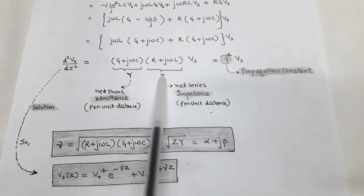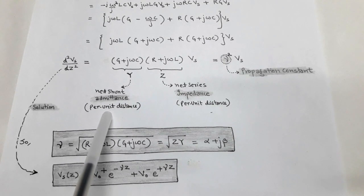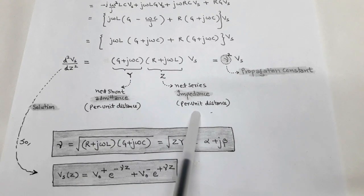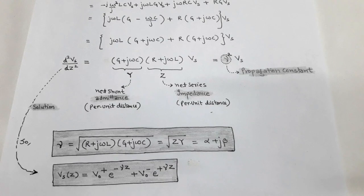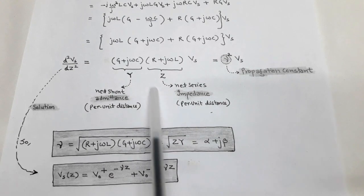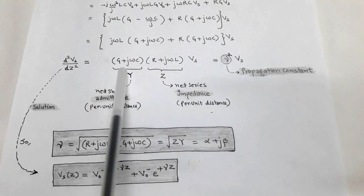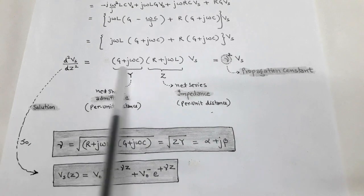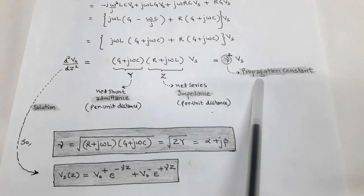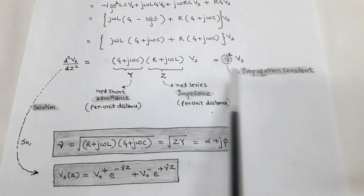Here we have two complex terms. The first, (G + jωC), is called the net shunt admittance and is denoted by Y. The second, (R + jωL), is called the net series impedance and is denoted by Z. These shunt admittance and series impedance are on a per unit distance basis. The product of Y and Z is called γ², which is called the propagation constant. So γ² = (G + jωC)(R + jωL).